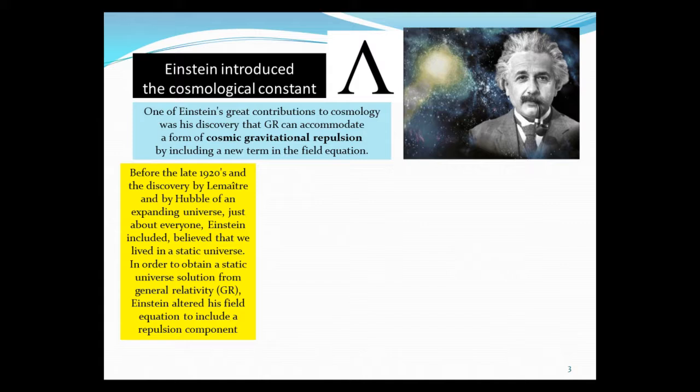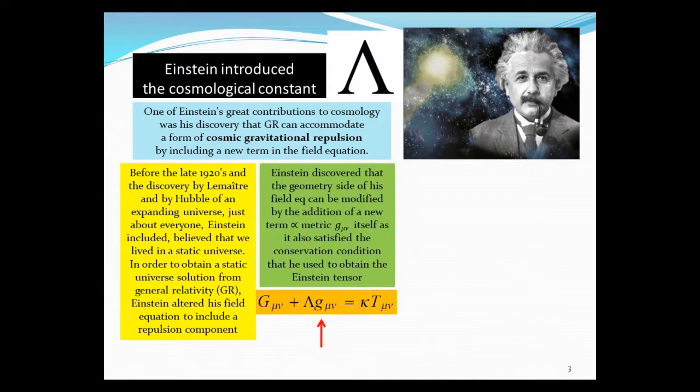So in order to obtain a static universe solution from general relativity, Einstein altered the field equation by including a repulsive component. What Einstein discovered: the geometric side—remember his equations have the left-hand side geometric, and right-hand side is energy and momentum—the geometric side of the field equation can be modified by addition of a new term which is proportional to the metric itself, as they all satisfy the conservation conditions, and you obtain the Einstein tensor.